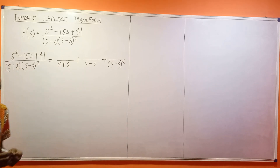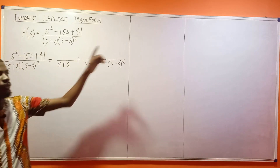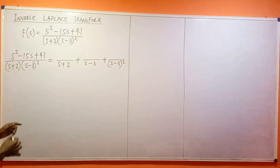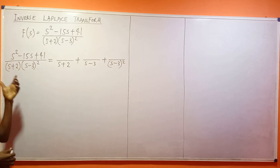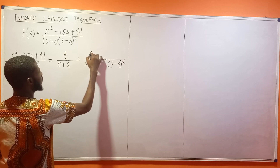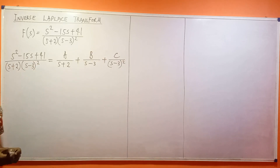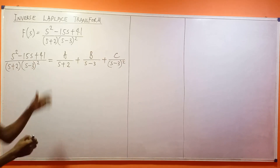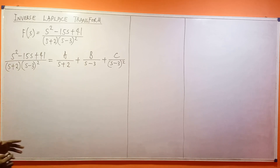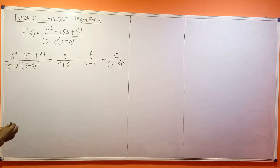If you can still remember partial fractions properly — if not, watch my videos on partial fractions. So now I'm going to be assigning constants A, B, and C at each term. What is the LCM?